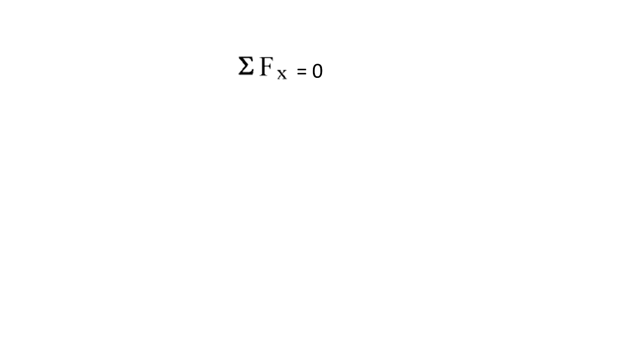Now I am going to do the summation of the forces in the x direction and it's going to be equal to zero because there is no acceleration, because it's static. So T2 cosine of theta2 is equal to T1 cosine of theta1.